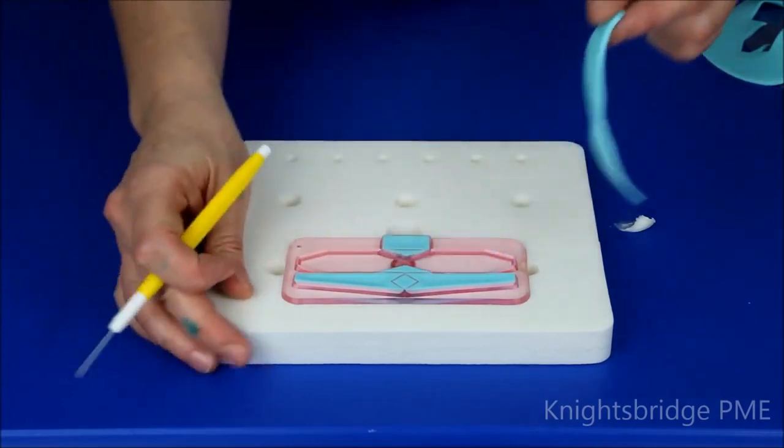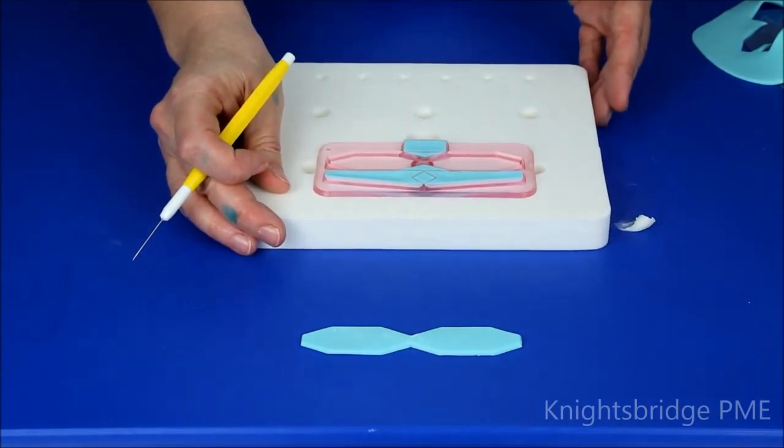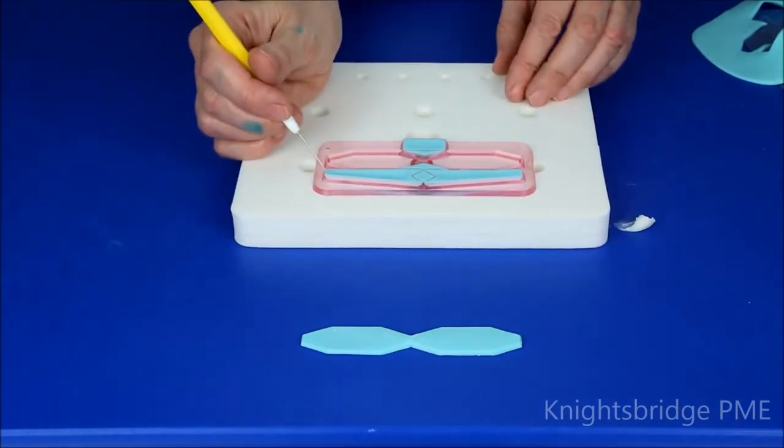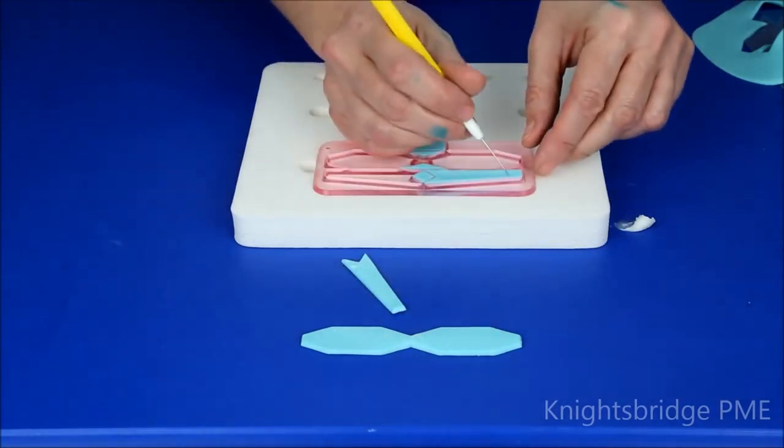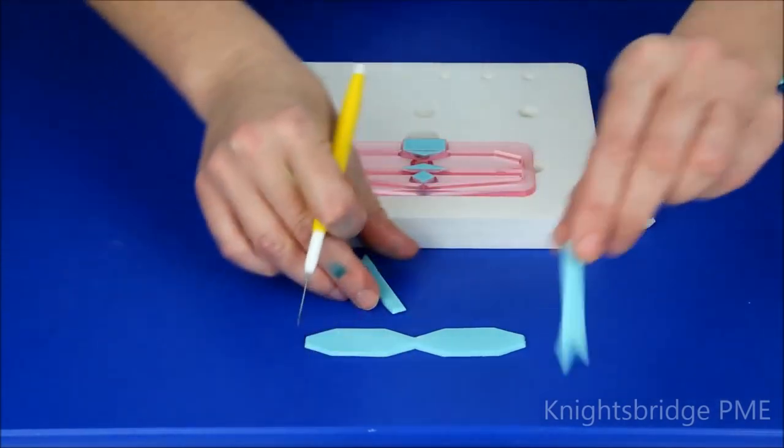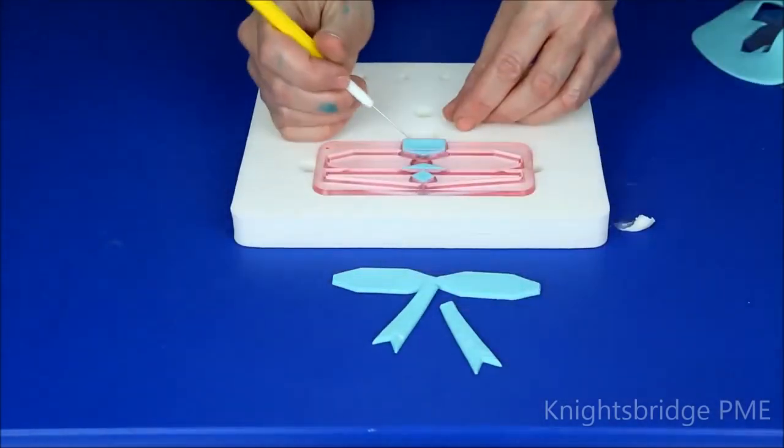So this is the main section of my bow. I'm just going to place that there for you to be able to have a look at. This is going to create the loops either side. This is going to be my tails. I'll place that the other way around so you can see that properly.